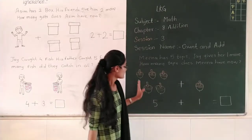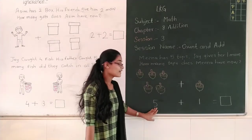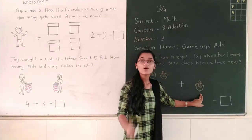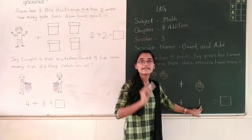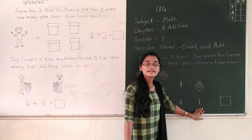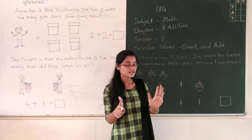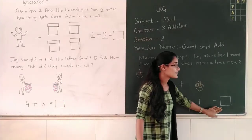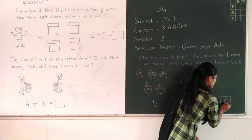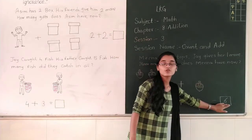Now students, I have drawn 5 tops here, that's why I have written 5. How many tops are here? 1. So I have written 1. 5 tops plus 1 top is equal to how many tops? 6 tops. So 5 plus 1 is equal to 6. I am going to write 6 here.